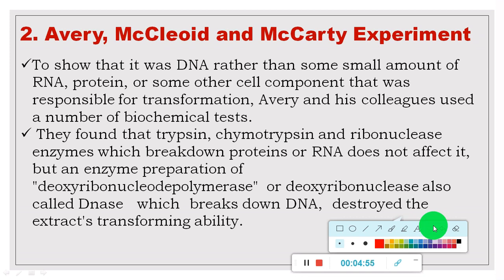Chemical analysis of this active portion showed the presence of carbon, hydrogen, nitrogen, and phosphorus in proportions similar to the chemical composition of DNA. These scientists proved that DNA — rather than RNA, protein, or other chemical components — is responsible for the transformation of R-type to S-type strains. They used different biochemical tests to prove this. They found that enzymes such as trypsin, chymotrypsin, and ribonuclease, which break down proteins and RNA, did not affect the transformation process. But when deoxyribonuclease (DNase), which breaks down DNA, was used, it destroyed the extract's ability to transform R strains to S strains.